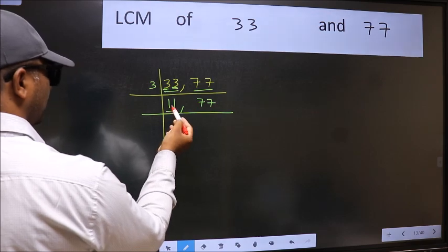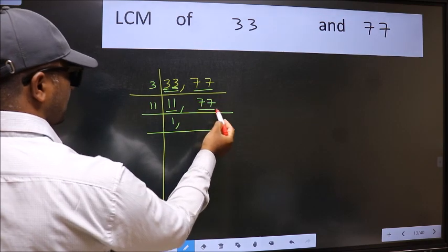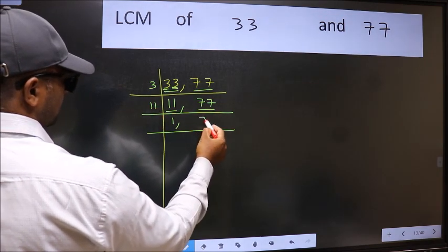Now here we have 11. 11 is a prime number, so 11 ones 11. The other number 77 - when do we get 77 in 11 table? 11 sevens 77.